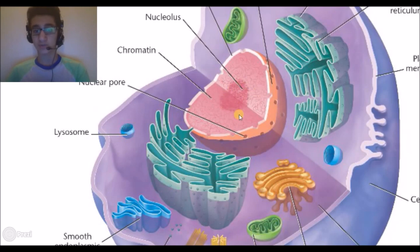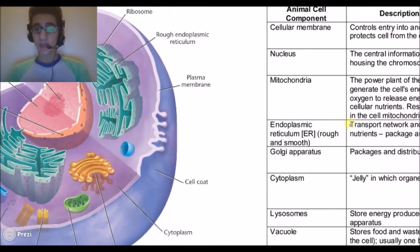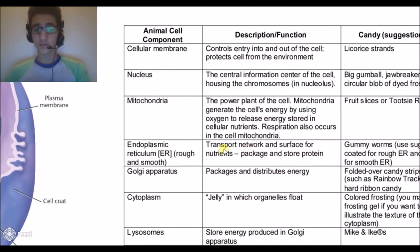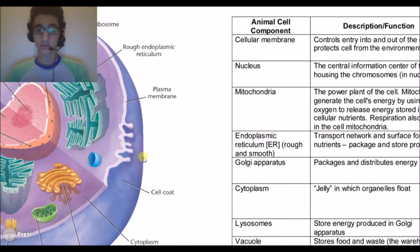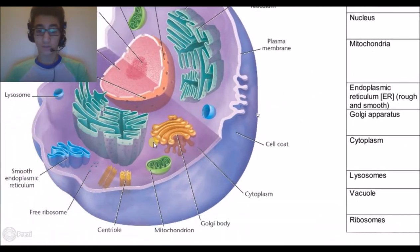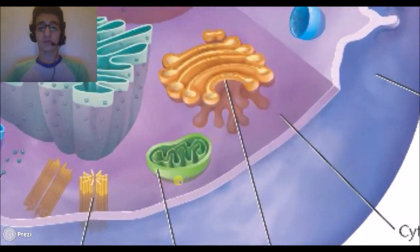We'll go to the mitochondria which is the powerhouse of the cell. The mitochondria generates the cell's energy by using oxygen to release energy stored in the cellular nutrients. Respiration also occurs in the mitochondria. This is the mitochondria right here.